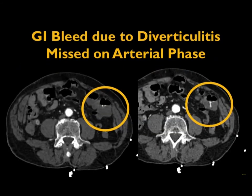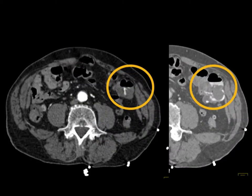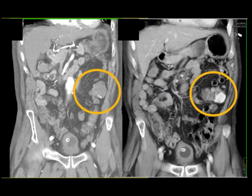Number one cause: diverticulitis. We do dual phase CT because sometimes the bleed is best seen on the venous phase. Sometimes you can see it on both phases, but it's very subtle on the arterial phase, like this case. You do see an area of brightness, and you should recognize that as a bleed. But look what happens when you go to venous phase — look how brisk the bleeding is. So one thing I can say: that's very brisk bleeding, so angio will probably be positive.